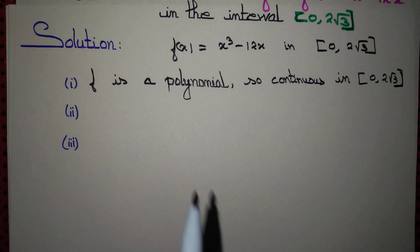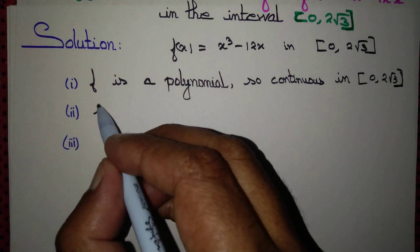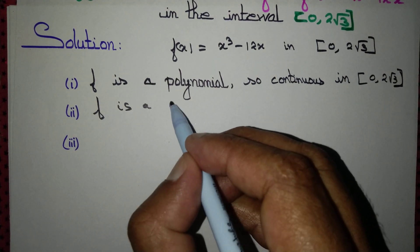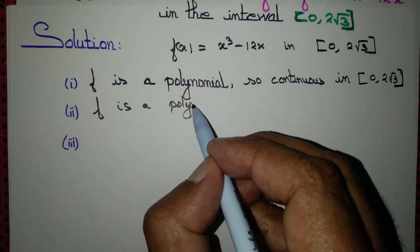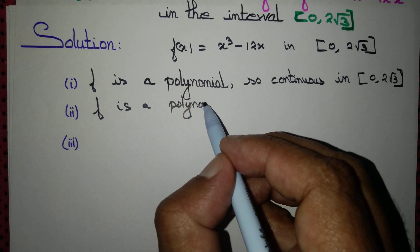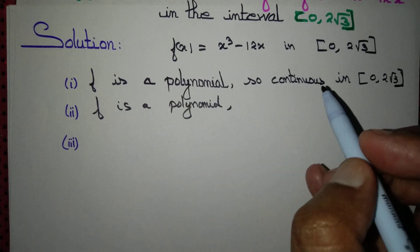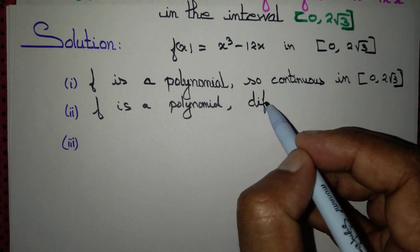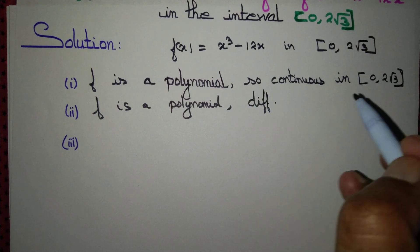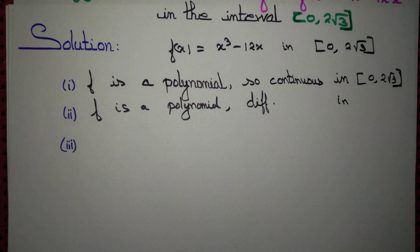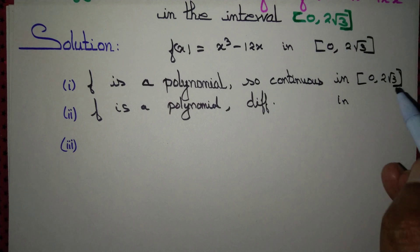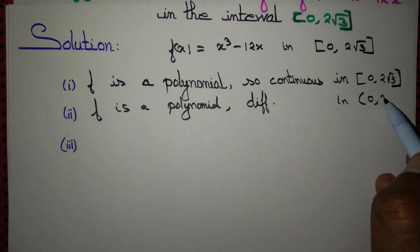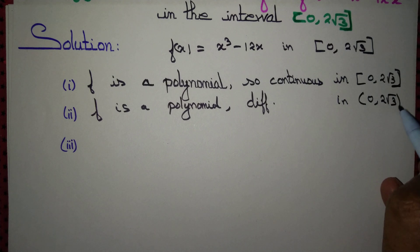What about differentiability? Again, f is a polynomial, and polynomials are differentiable. For this criterion we don't need even the closed interval — just the open interval (0, 2√3) will do.